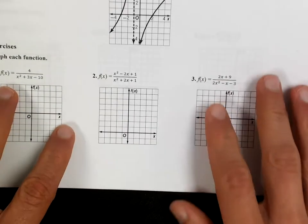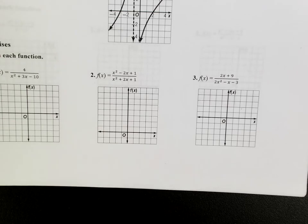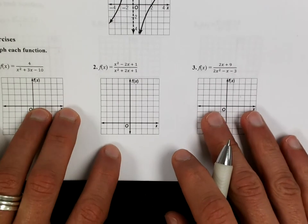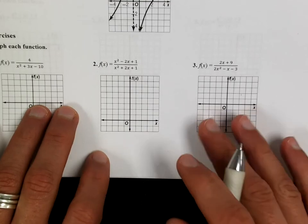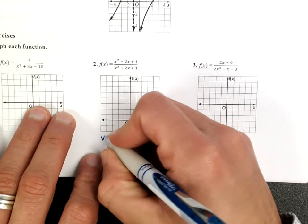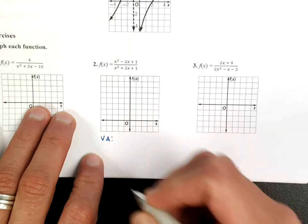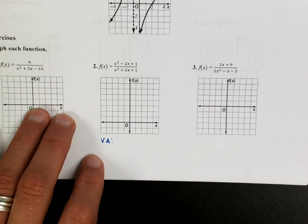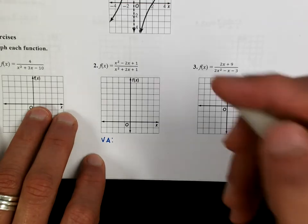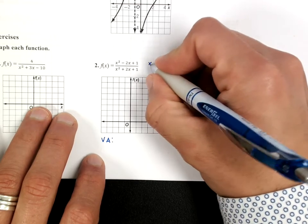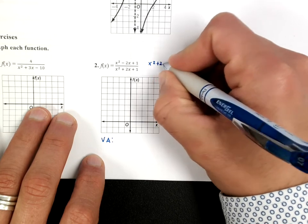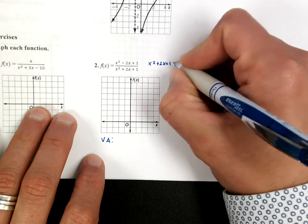So if we take a look at number two, for example, there are certain things that I expect you to know without a calculator. I expect you to know how to find the vertical asymptotes. The vertical asymptotes are going to be located — you can find them by setting the denominator equal to zero.